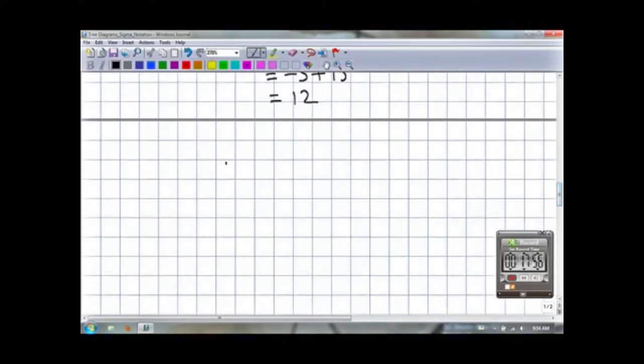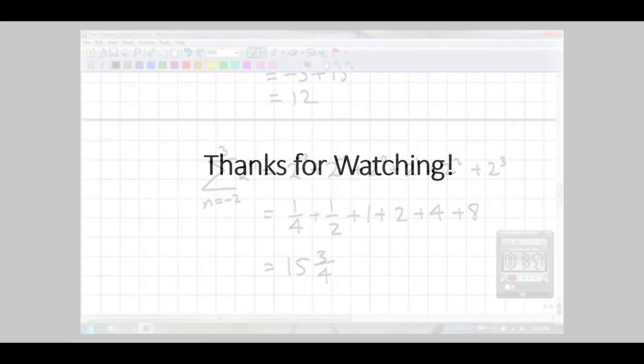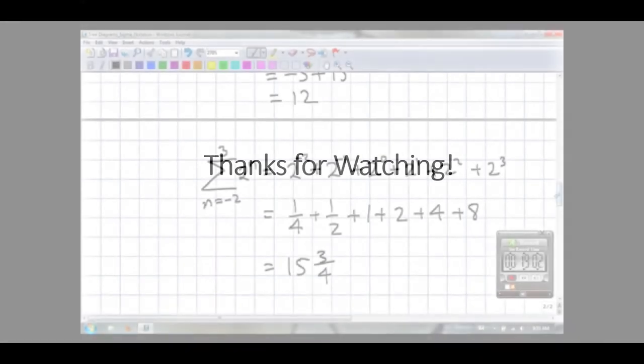And so, let's say if n goes from negative 2 to 3 and let's say we have now 2 to the n. Notice we start with 2 to the power of minus 2, 2 to the power of minus 1, 2 to the 0, 2 to the 1, 2 squared, 2 cubed. Add them all up and we end up with a mixed fraction at the end of this question: 15 and 3 quarters.